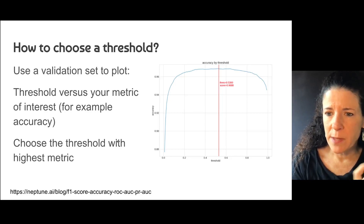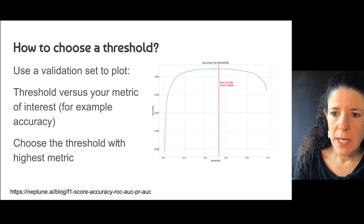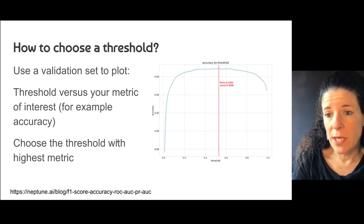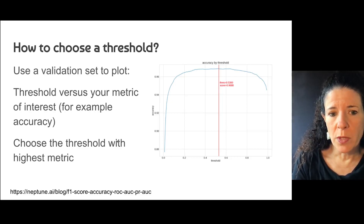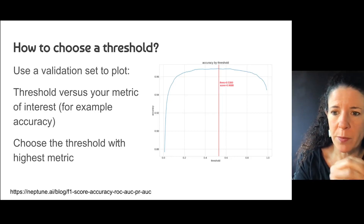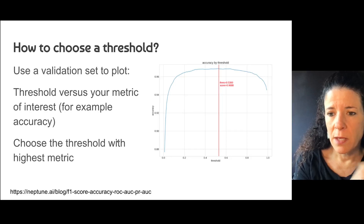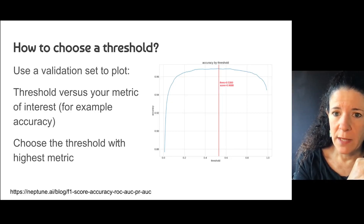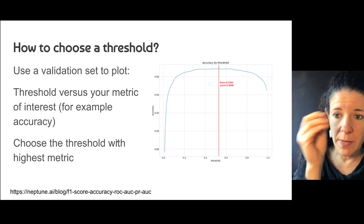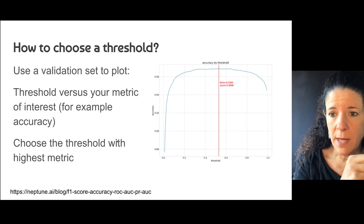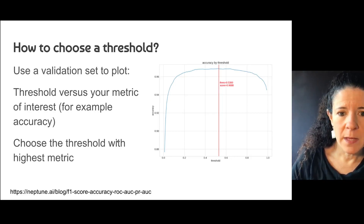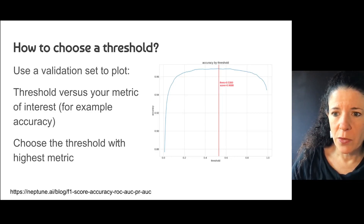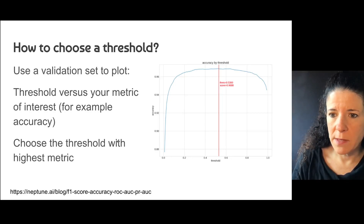How do you choose a threshold? One approach is to use a validation set and plot threshold versus your metric of interest — for example, accuracy. You compute accuracy on the validation set for different threshold values and then pick the threshold that maximizes your metric.